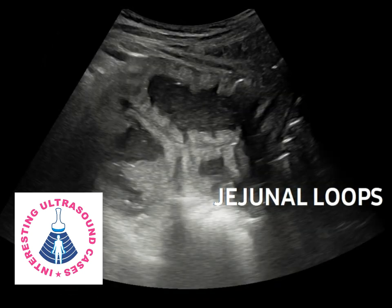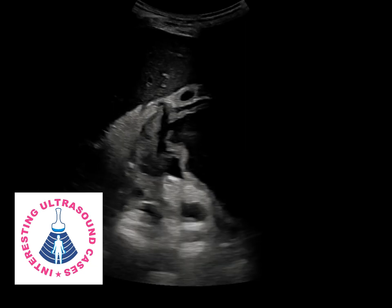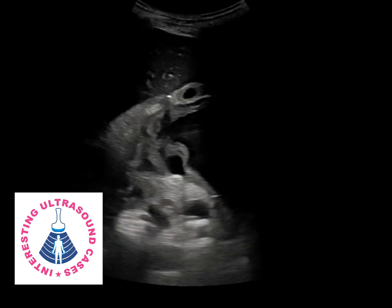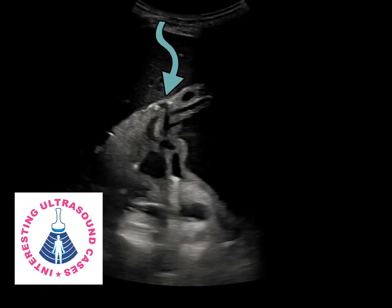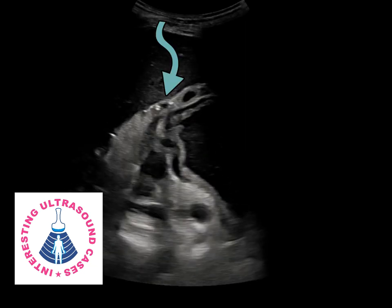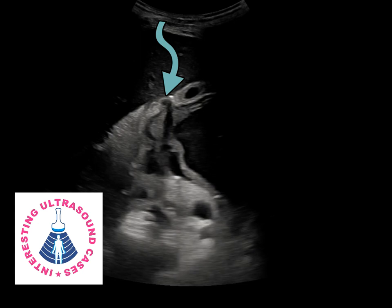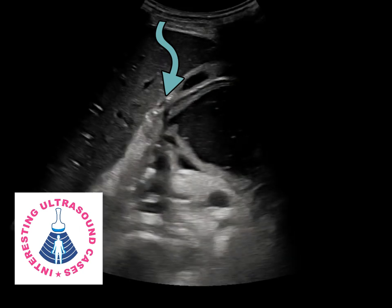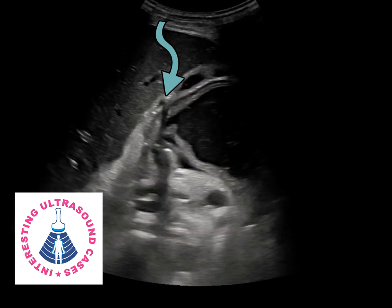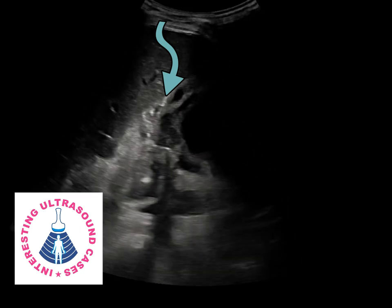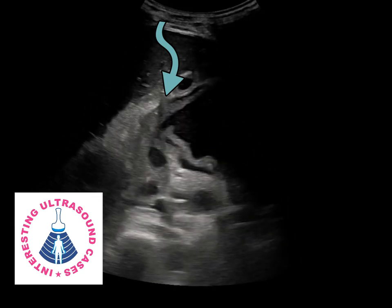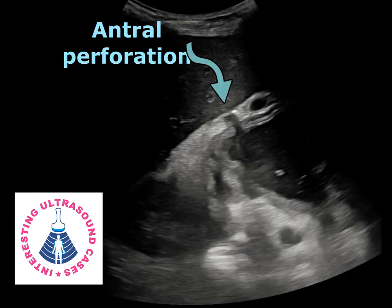The small bowel loops appear diffusely edematous, suggesting diffuse enteritis. Then I searched for the site of perforation. Here we can see a small defect in the antrum, which is the perforation site and the cause for perforation peritonitis.